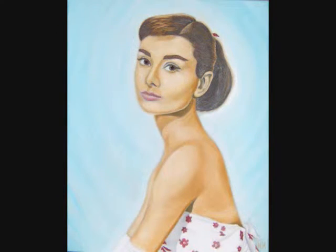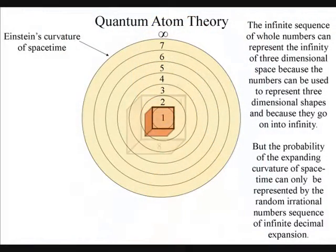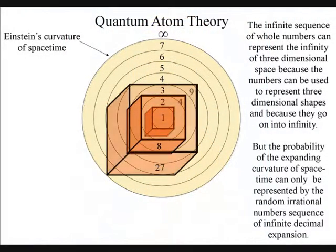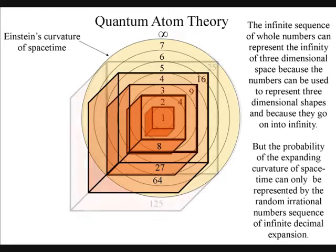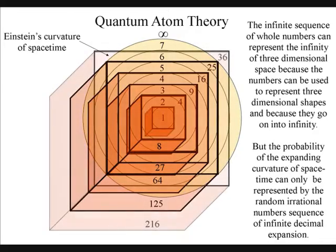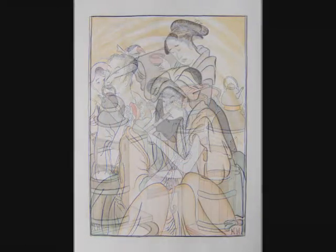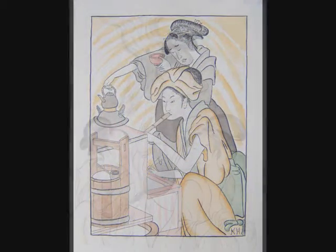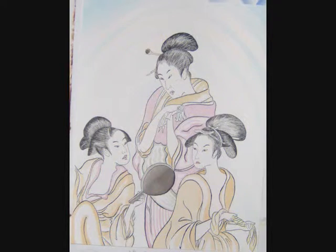It is easy to see how our infinite sequence of whole numbers can represent the infinity of three-dimensional space because the numbers can be used to represent three-dimensional shapes. But it is the irrational numbers that drop out of the whole number sequence that represent the never-ending expansion of time.